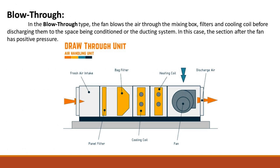In the blow-through type, the fan blows the air through the mixing box, filters, and cooling coil before discharging it to the space to be conditioned or the ducting system. In this case, the section after the fan has positive pressure.